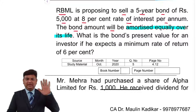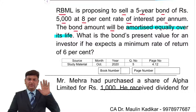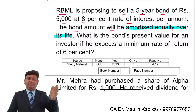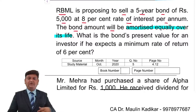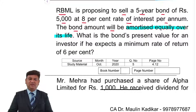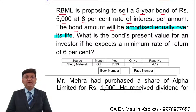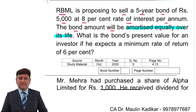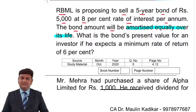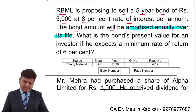What does amortized equally over its life mean? It means 5000 divided by 5 — every year 1000 will be paid to the investor in the form of redemption value of the security. So every year 1000 will be paid.